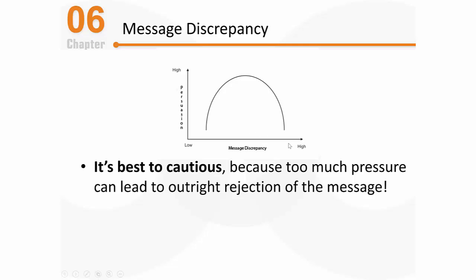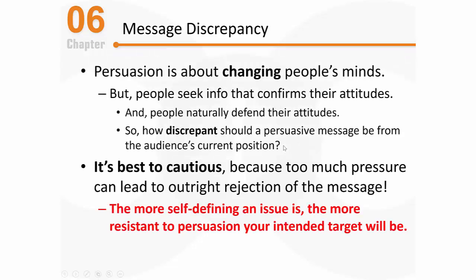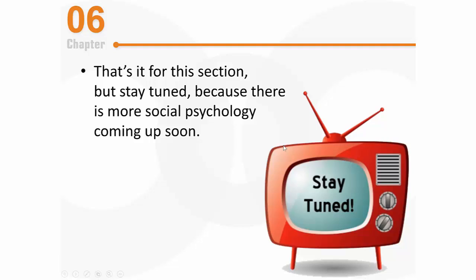People don't appreciate being told their current worldview is wrong — you might be right, but they will likely resist it, at least initially. The more self-defining an issue is, the more resistant to persuasion the intended target will be. There are individual differences in how open-minded people will be — some people will embrace a chance to redefine themselves based on your persuasive appeal, but most people won't. That's it for this section, but stay tuned for more social psychology.